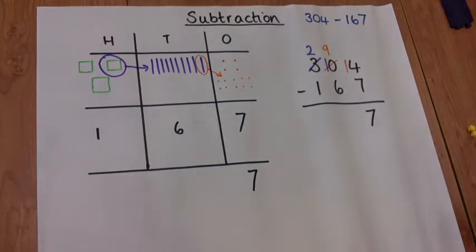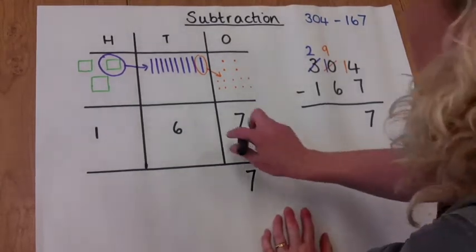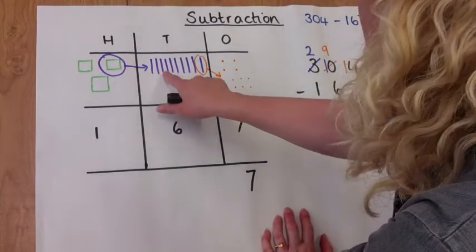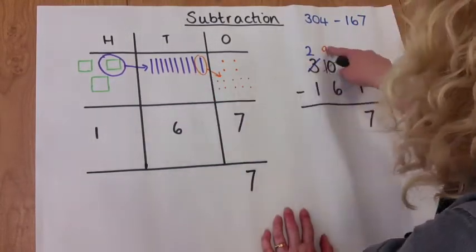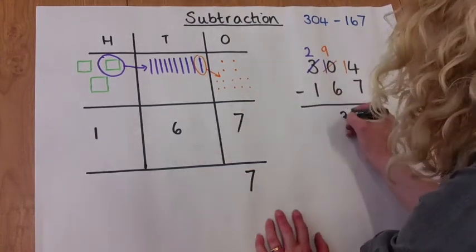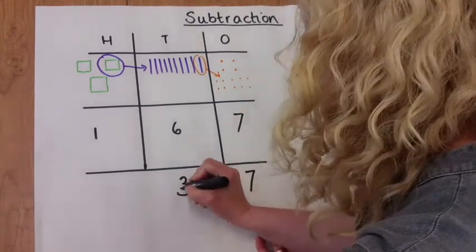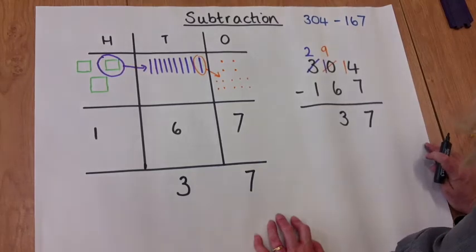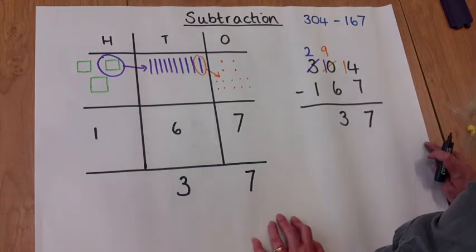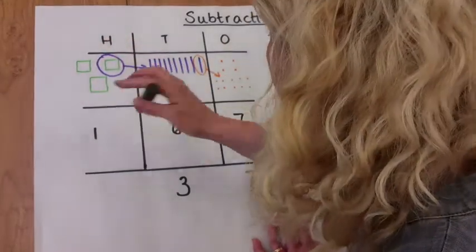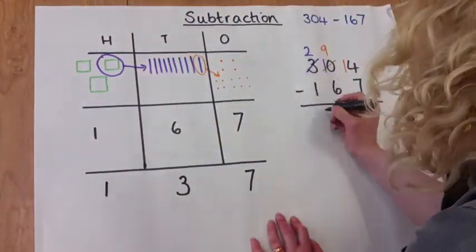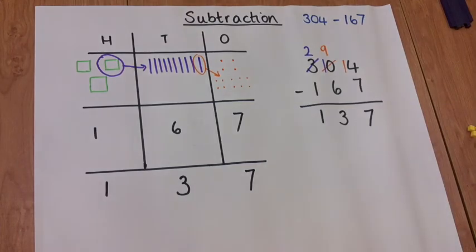Now looking at the tens column. Nine subtract six makes three. Again, less confident learners might want to cross out six tens at the top. And in the hundreds column, we've got two hundreds less one makes one. So the answer is 137.